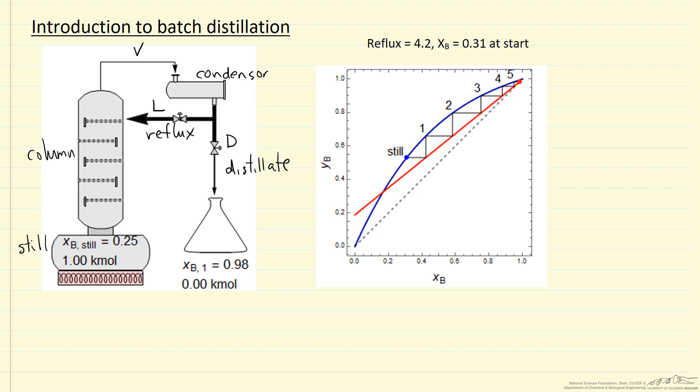And the red line is the operating line. So the operating line goes through this red point which is the mole fraction of the distillate.